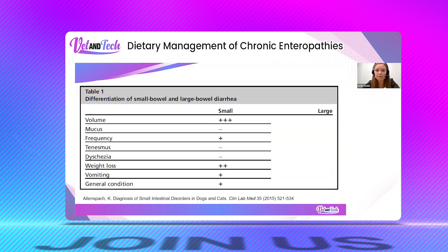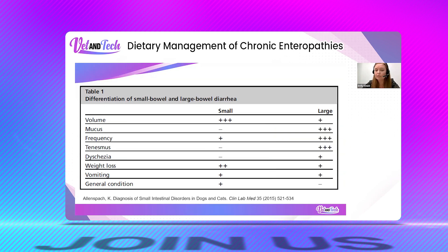As many of us know, small intestinal disease is going to differ clinically and significantly from large intestinal. With small, we usually see a normal to increased volume, whereas with large it's often going to be decreased. Conversely, with large intestinal disease we're going to see increased frequency, smaller amounts, and usually a lot more mucus.